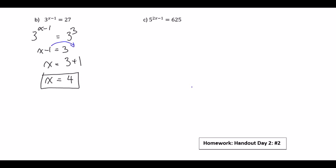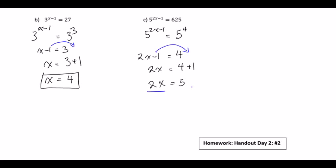The next problem is very similar. We have 5 to the 2x minus 1. Now, 6.25 is 5 to the 4, so you can check that and you're good to go. Since our bases are the same on both sides, we drop the base: 2x minus 1 is equal to 4. Moving the minus 1 to the other side, we have 2x is equal to 4 plus 1, which is 5. So 2x is equal to 5. We divide both sides by 2, and we get x is equal to 5 over 2, or 2.5. Both are valid.